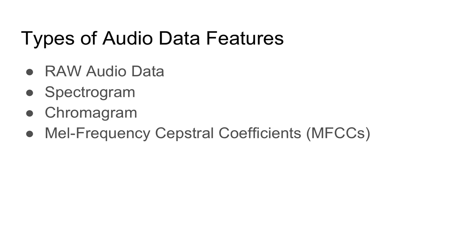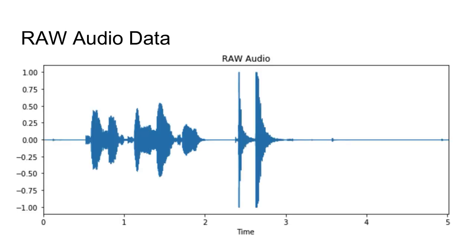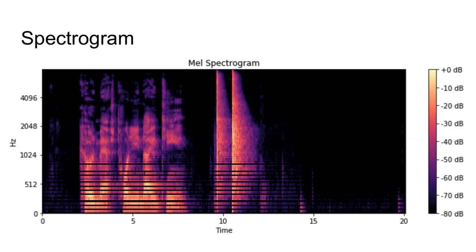Next we're going to talk about different types of audio features and how you can generate them. First we'll talk about raw audio data — amplitude measurements taken at every sample. In this example, we have a five-second wave with a timescale from one to five. The sampling is at 44.1 kHz, so over this entire file we processed 221,000 elements to produce this graph simply by opening up the file and showing the data.